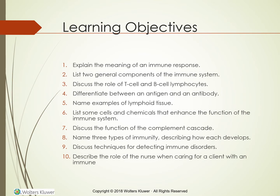Learning objectives: Explain the meaning of an immune response. List two general components of the immune system. Discuss the role of T-cell and B-cell lymphocytes. Differentiate between an antigen and an antibody. Name examples of lymphoid tissue. List some cells and chemicals that enhance the function of the immune system. Discuss the function of the complement cascade. Name three types of immunity, describing how each develops. Discuss techniques for detecting immune disorders. Describe the role of the nurse when caring for a client with an immune issue.